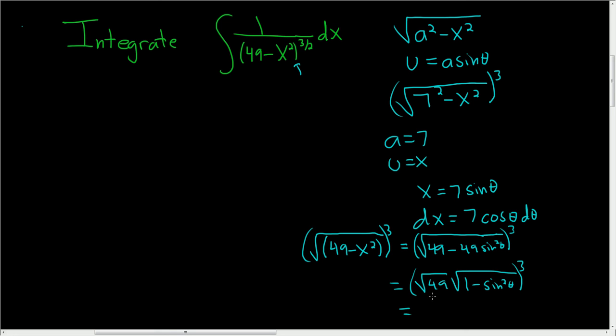And so finally, the square root of 49 is 7. And then we're cubing it, so we get 7 cubed. And 1 minus sine squared is cosine squared. So we're going to get cosine squared. And we'll take the square root, and we'll get cosine. But then we're cubing it. So it's going to be cosine cubed of theta.